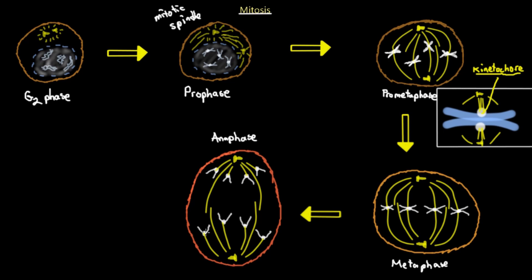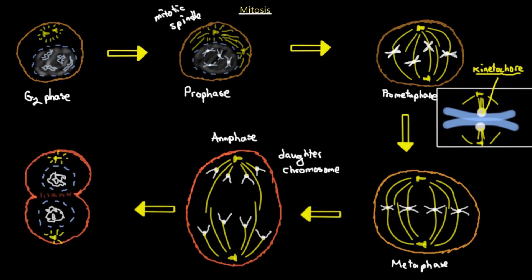The next stage is anaphase. Most notably, each kinetochore is being pulled to its own pole — the mitotic spindle is pulling the chromosomes apart and each sister chromatid is pulled to its own end of the cell. The new name for these sister chromatids is daughter chromosomes, because they're actual chromosomes — they're no longer chromatids since they've been pulled apart.